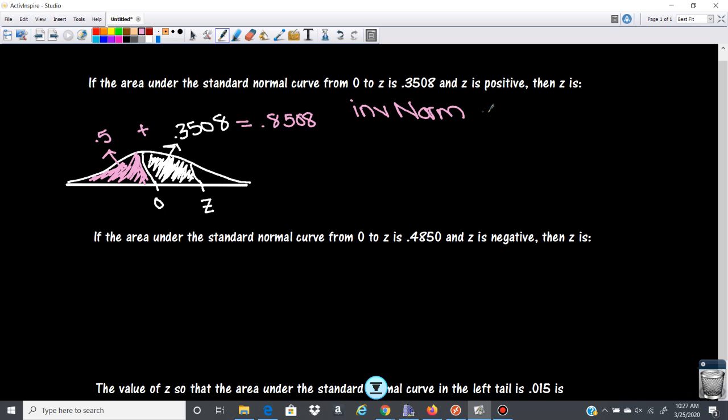And when we do inverse norm, we want the area to the left and then our mean and our standard deviation. Okay, now in this case, this is given to us in normalized terms. So our mean is 0 and our standard deviation is 1.